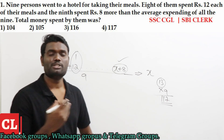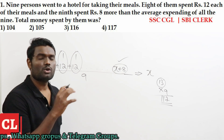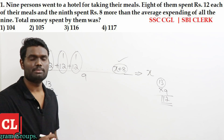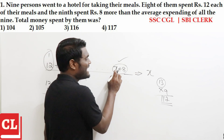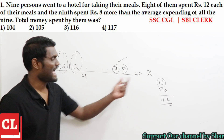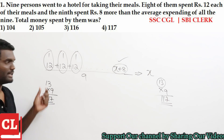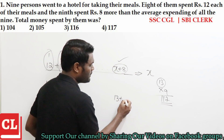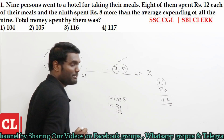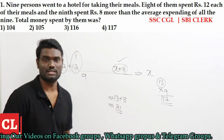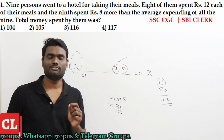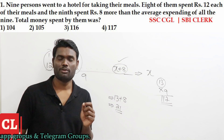Sometimes the question will ask us to find the total amount spent by the 9th person. The 9th person spent X plus 8 rupees, and we just came to know that X — the average — is 13. So the 9th person is going to spend 13 plus 8, which is 21 rupees.